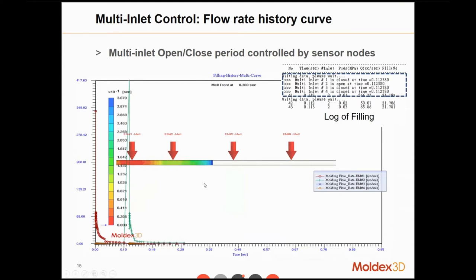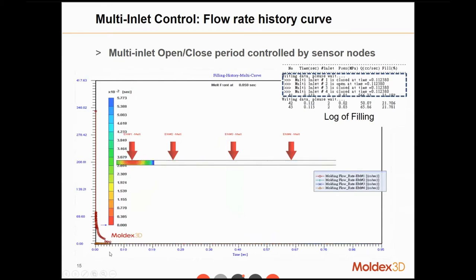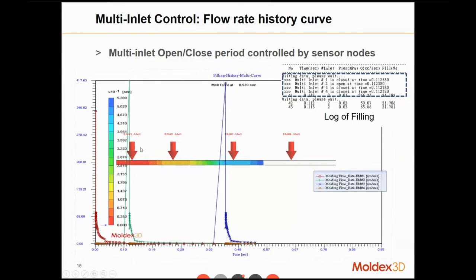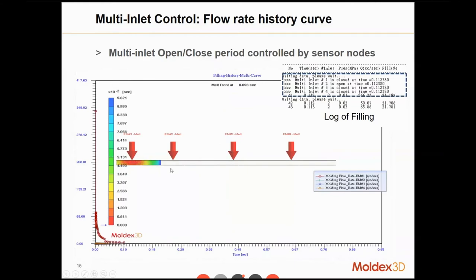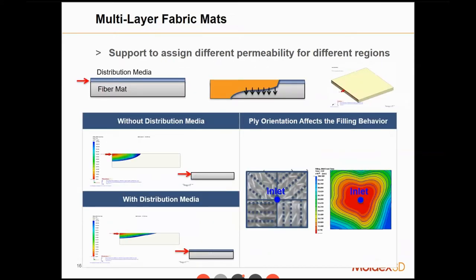There are basically two kinds of ways to control flow rates. There is also an option to control multiple melt inlets. For example, with four inlets in total, the history curve shows four peaks, each peak representing one inlet. When melt entrance two is open, we can close entrance one; when entrance three is open, we can close two; and when four is open, we close three. This sequential inlet opening is a very common option in a real RTM process.